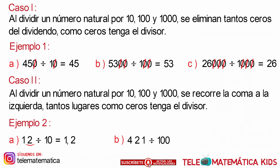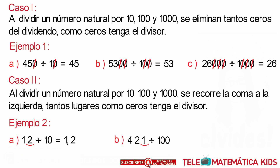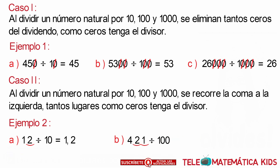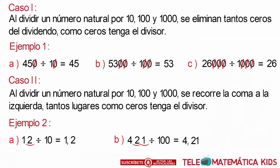Aplicando el procedimiento, como no existen ceros a la derecha del dividendo que podamos simplificar, corremos la coma dos lugares a su izquierda y nos quedaría como resultado 4,21.